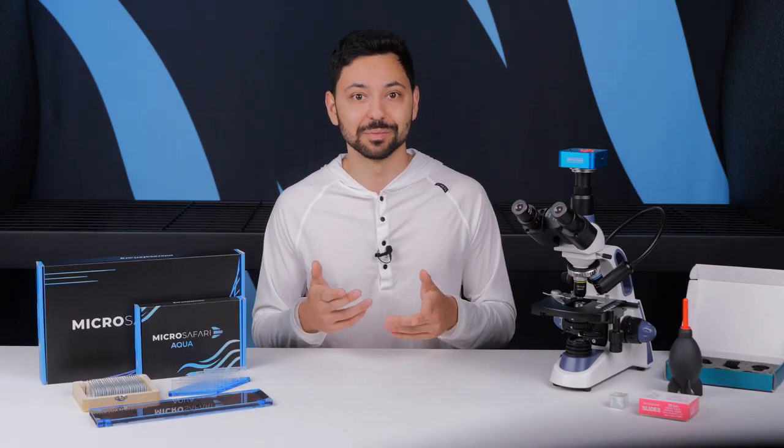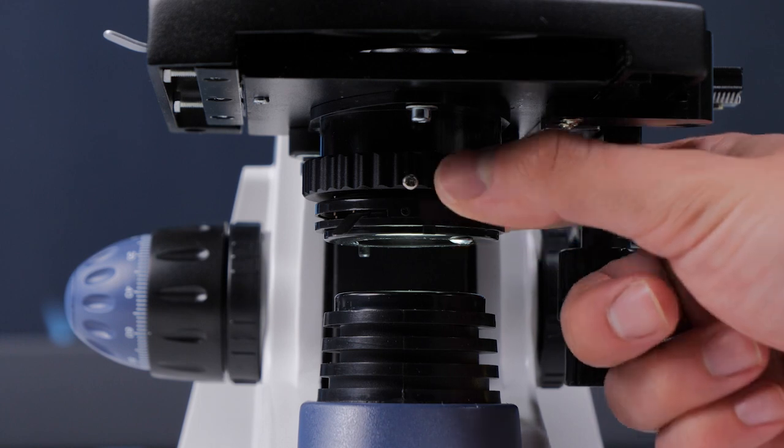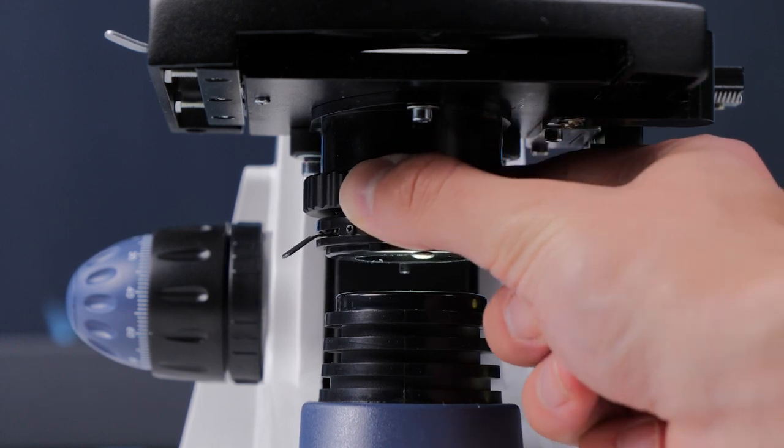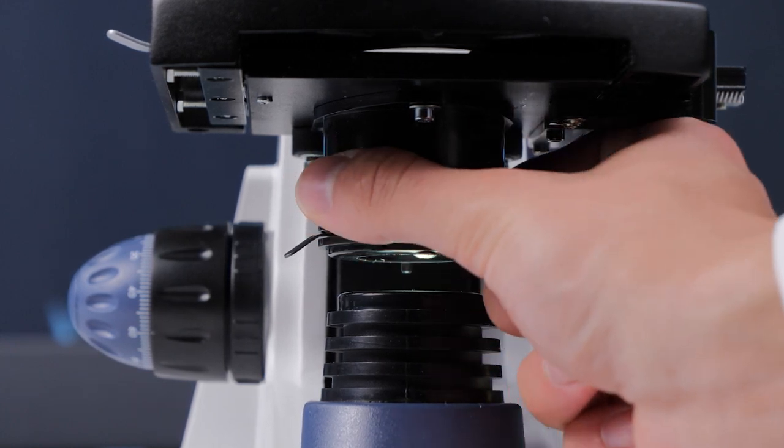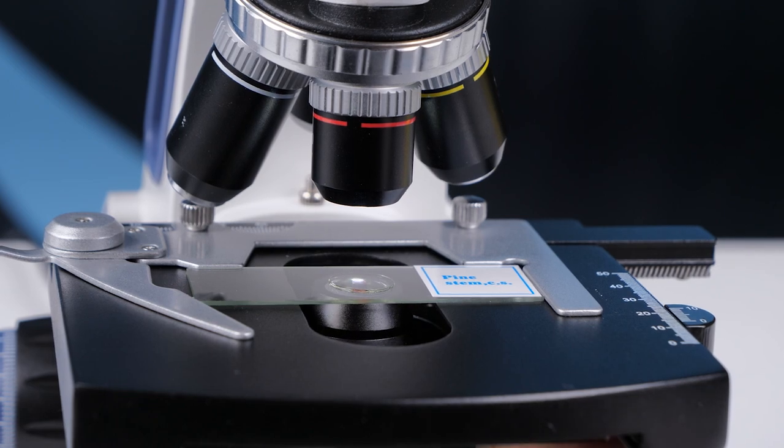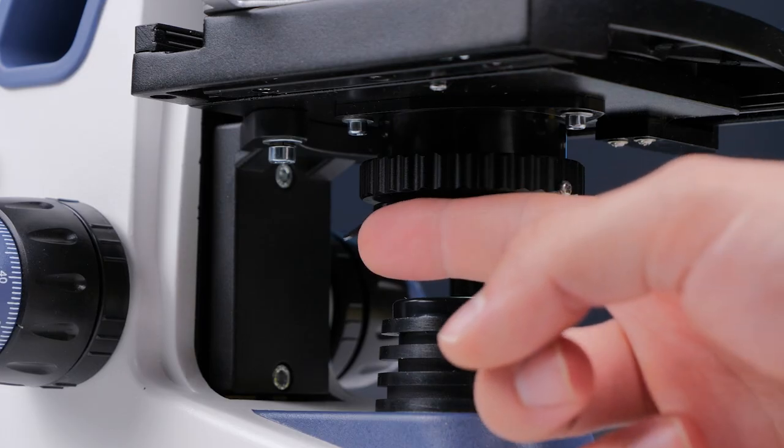Moving on to optimizing the illumination. If you rotate the knurled area of the condenser it'll move the whole condenser up or down. You'll almost always want to have it all the way up. Then on the side you have the iris adjustment lever.